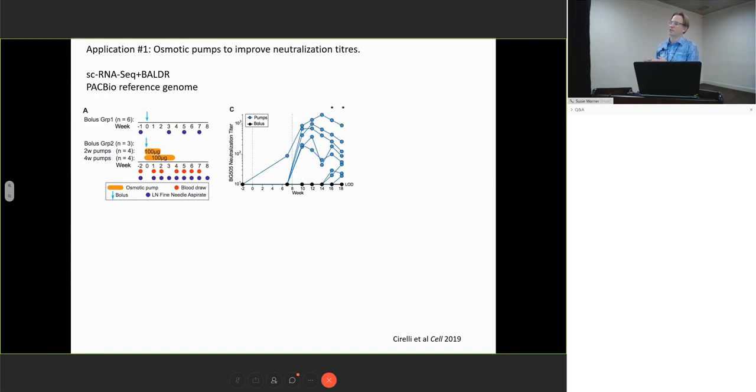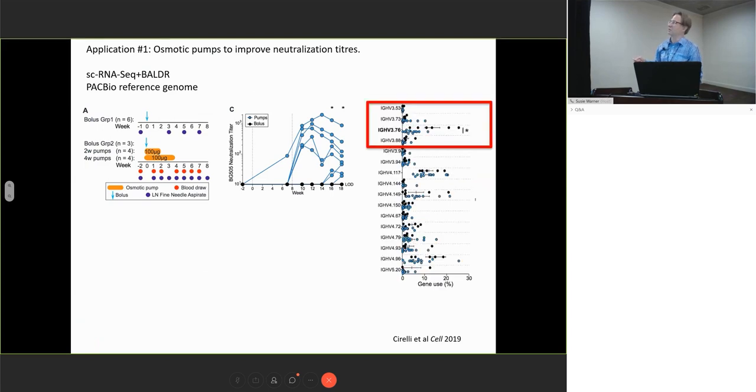We had a very remarkable finding where the animals that were getting the bolus injection had no autologous neutralizing antibodies. The animals that were getting pumps, almost all of them—even though they got the same quantity of the vaccine over a period of time—actually all developed neutralizing antibodies. When we did rep-seq or repertoire analyses on the germinal center B cells, we found that the bolus animals tended to have a more restricted usage of different V genes.